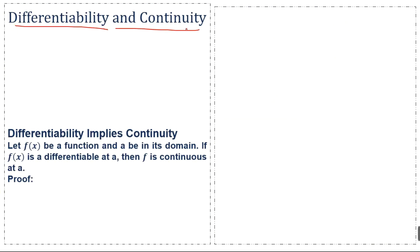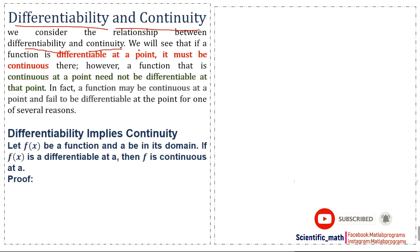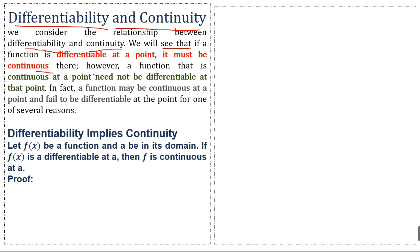We consider the relationship between differentiability and continuity. We will see that if a function is differentiable at a point, it must be continuous there. However, a function that is continuous at a point need not be differentiable at that point. In fact, a function may be continuous at a point and fail to be differentiable for one of several reasons.